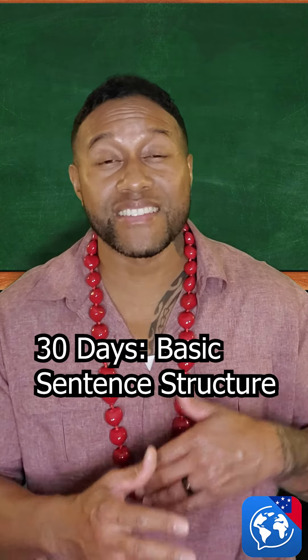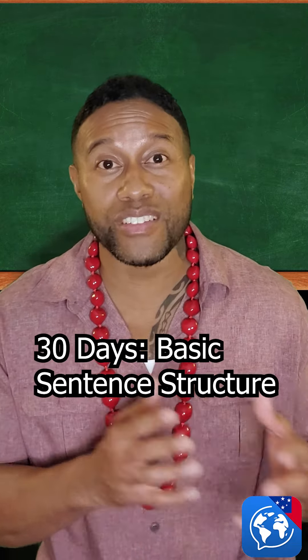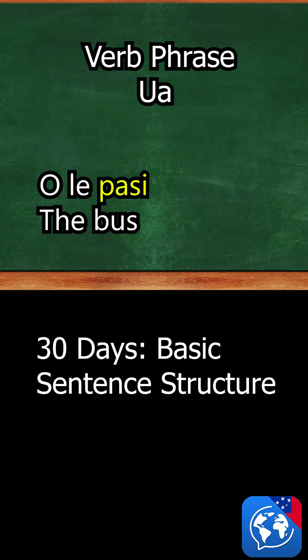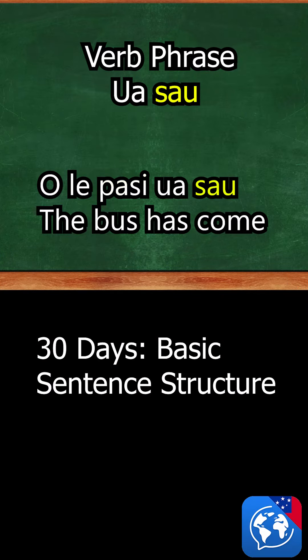Verbs are usually connected to tense markers like recent tense 'ua' and then the verb 'sau' or 'come' — 'ua sau' means 'has come'.